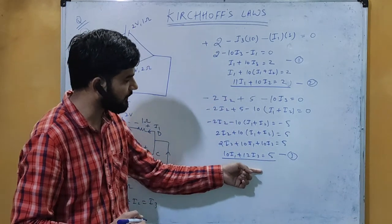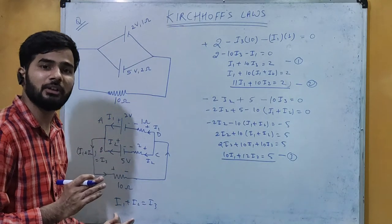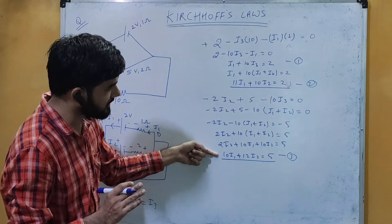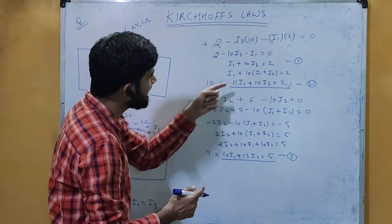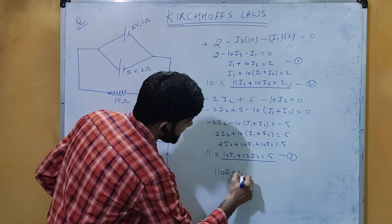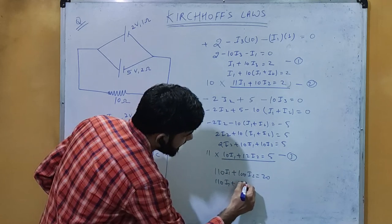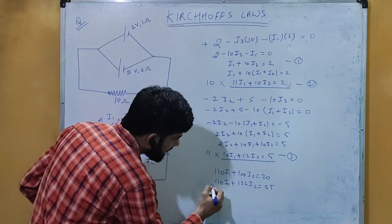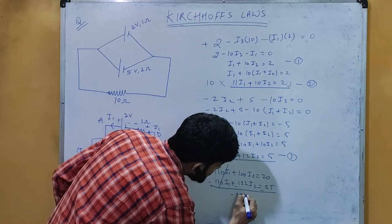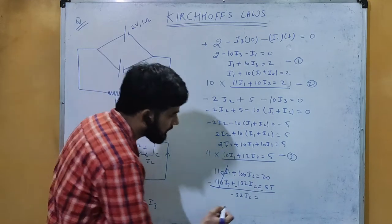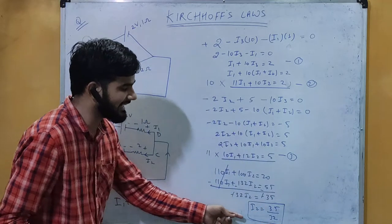To solve, multiply equation 2 by 10 and equation 3 by 11. This gives: 110 i1 plus 100 i2 equals 20, and 110 i1 plus 132 i2 equals 55. Subtracting: 132 i2 minus 100 i2 equals 55 minus 20, giving minus 32 i2 equals minus 35. Therefore i2 equals 35 divided by 32, which is approximately 1.1 ampere.